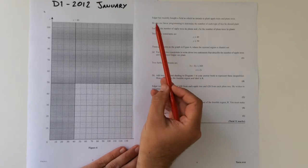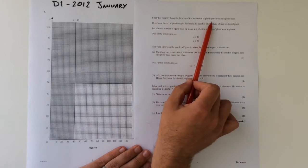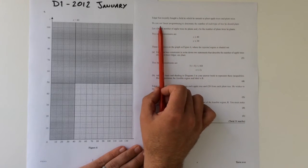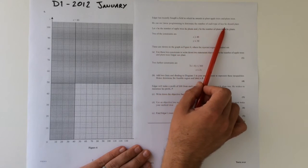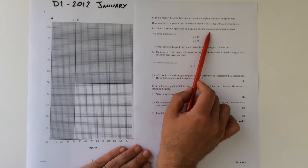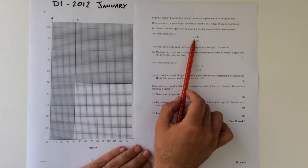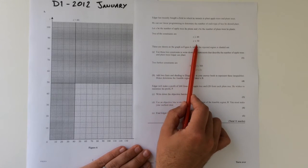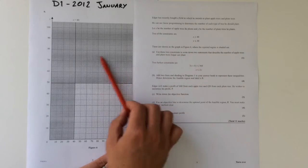We've got a description. We've got a field, we're going to be planting some apple trees and plum trees. We're going to use linear programming to determine the number of each type of trees that Edgar will plant. x is the number of apple trees, y is the number of plum trees, and two of the constraints are x is greater than or equal to 40, y is less than or equal to 50. And they're shown in this graph.